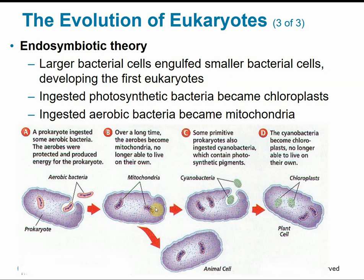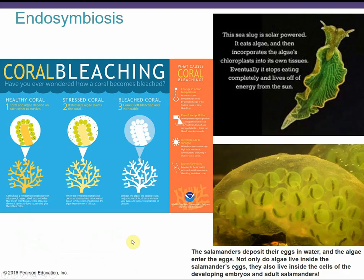Mitochondria and chloroplasts also have their own DNA in a circular chromosome, just like in prokaryotes and bacteria. Mitochondrial DNA is only passed from the mother because it's a completely separate strand from the nuclear DNA, and there are no mitochondria in sperm — so none of the father's mitochondria make it to the egg. The egg only contains the mother's mitochondria. Additionally, mitochondria and chloroplasts can divide on their own via binary fission, just like bacteria do. This phenomenon of endosymbiosis is still occurring in nature today.